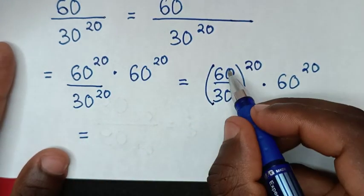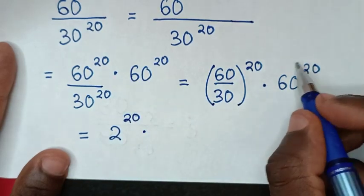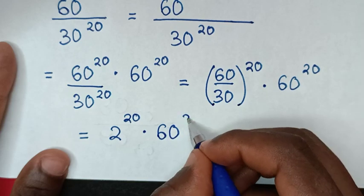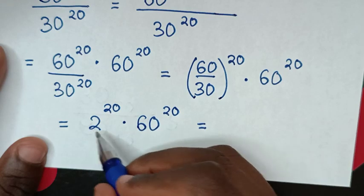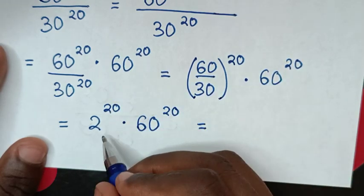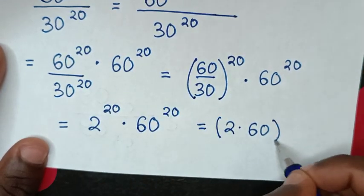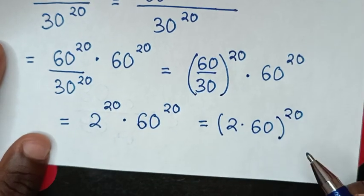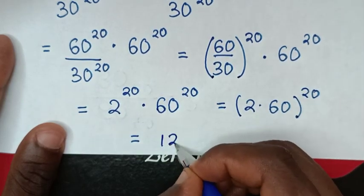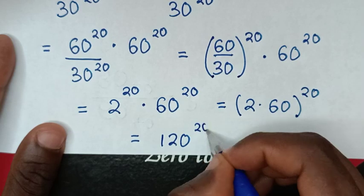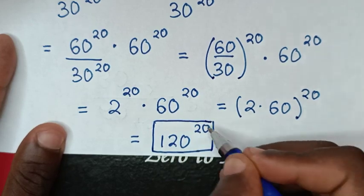Then in the next step, 60 divided by 30 is 2, power of 20, times the exponent 60 power of 20. Here the multiplication of exponents with the same power of 20 gives 2 times 60 is 120, power of 20. Therefore, this is our final answer — the same as the answer in the first method: 120 power of 20.